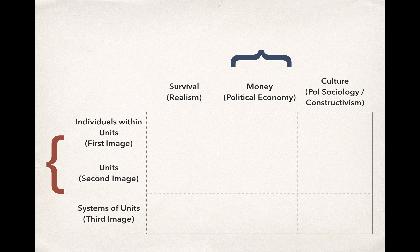This dimension tells us what motivates the decision maker. If the decision maker cares most about survival — whether their own survival, the country's, or the company's — we refer to this assumption as realism. If the decider is mostly worried about money, that's the school of political economy. If there's some cultural influence motivating the decision maker, we think about this as political sociology or constructivism.